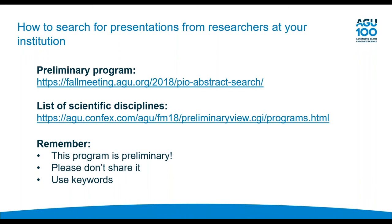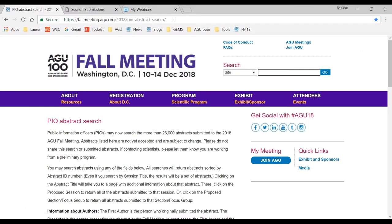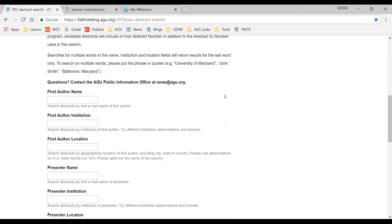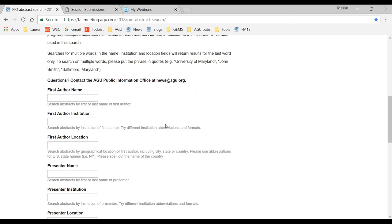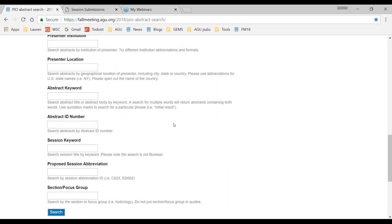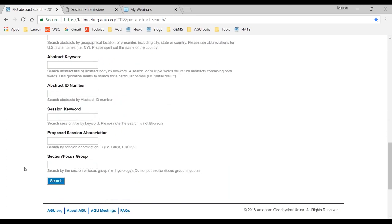Now I'm going to get out of the slideshow and actually show you how to search for presentations. There's a link in this slideshow and also in an email we'll send to all of you that links to an internal database of abstracts called the PIO Abstract Search. This is a preliminary fall meeting program. You'll go to this link and scroll down — there's general information about the search, and then you can search by many different categories: author's name, presenter's name, keyword, institution, abstract ID number, session keyword, or section and focus group.